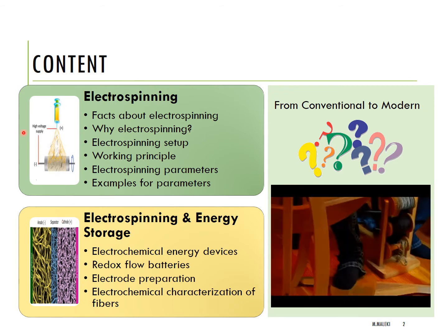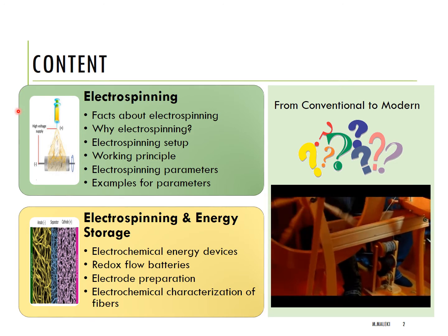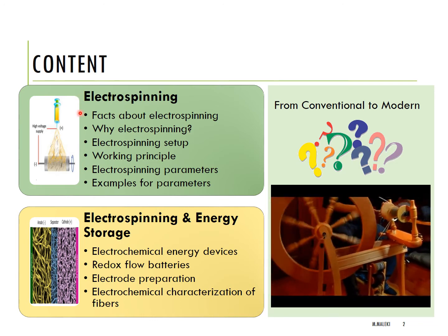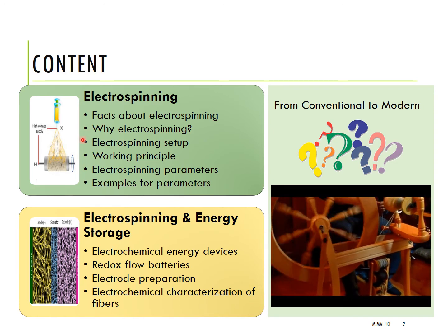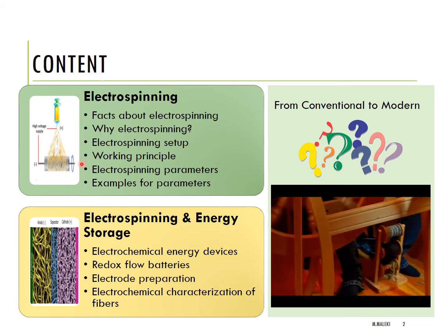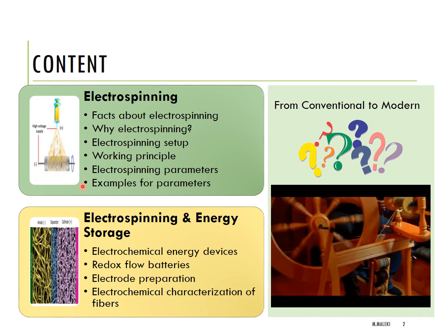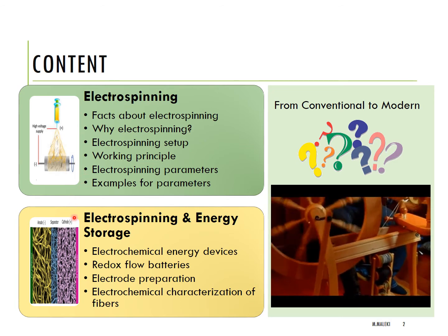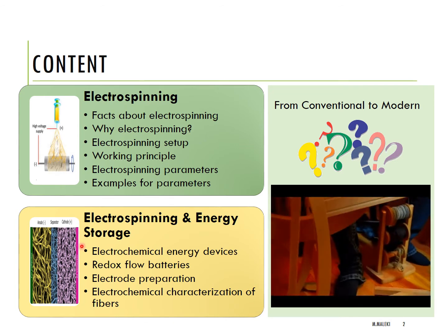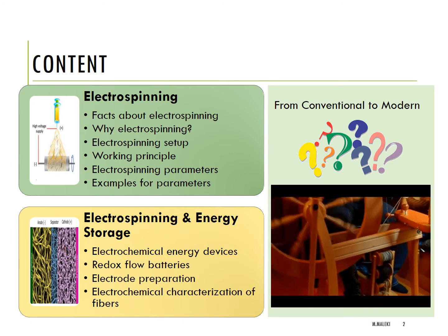One way to go from the conventional method of fiber fabrication to a modern one is electrospinning. In this presentation I will show you slides explaining electrospinning, including facts about electrospinning, why electrospinning, how the electrospinning setup works, what the working principles of this method are, and which are the most important electrospinning parameters with examples. In the second section, I will show slides about the application of electrospinning for energy storage devices, especially redox flow batteries, and how to make a nice electrode using this method.